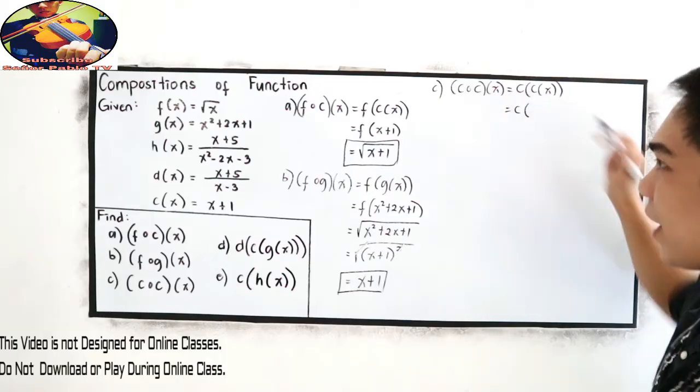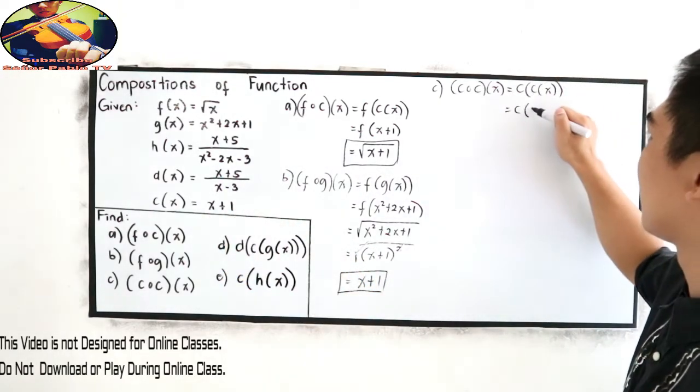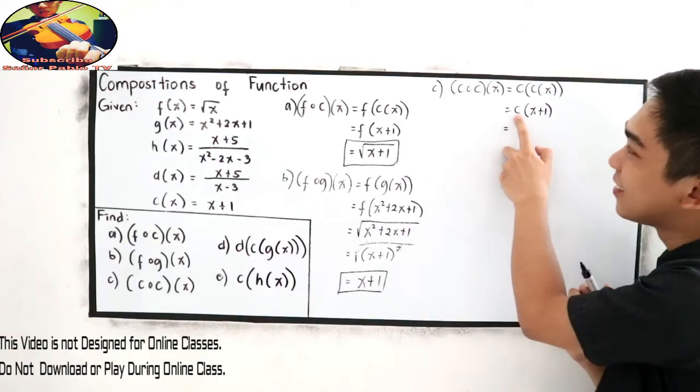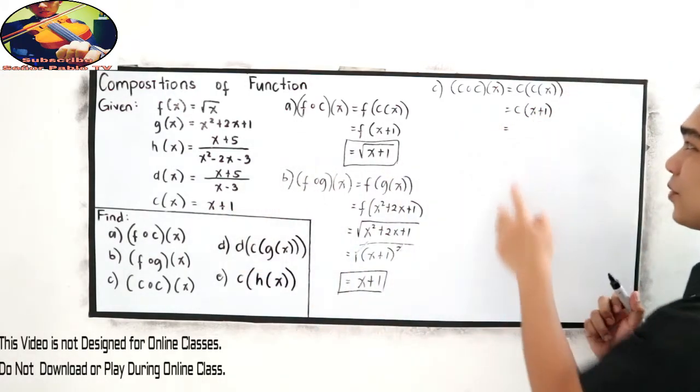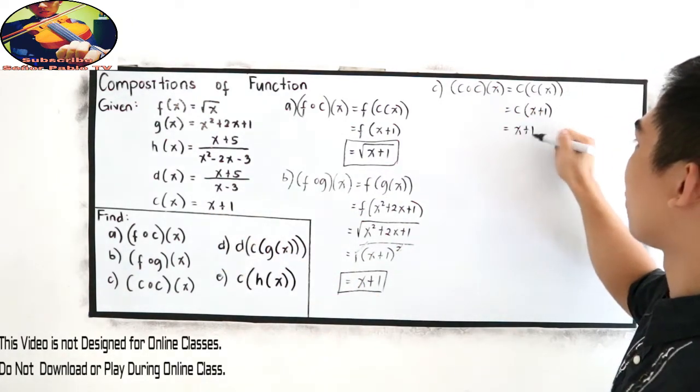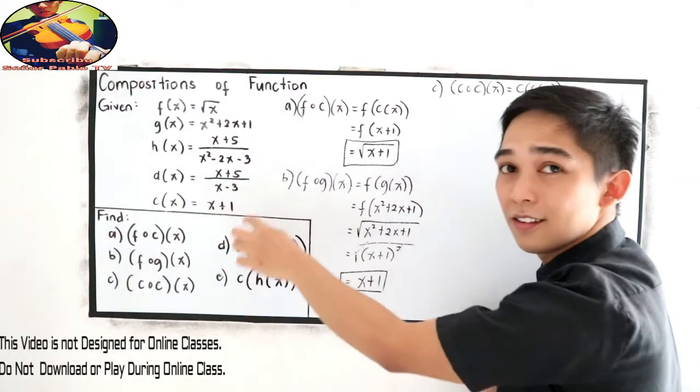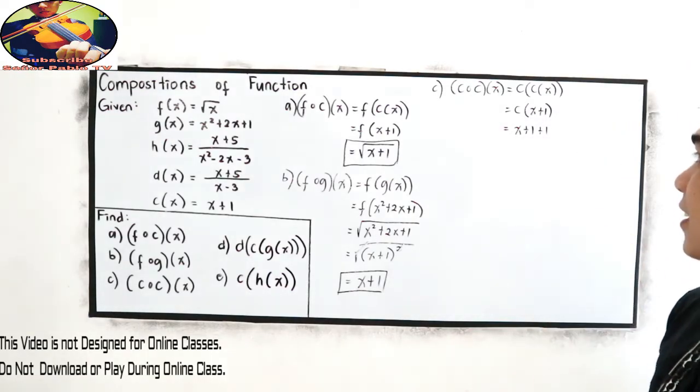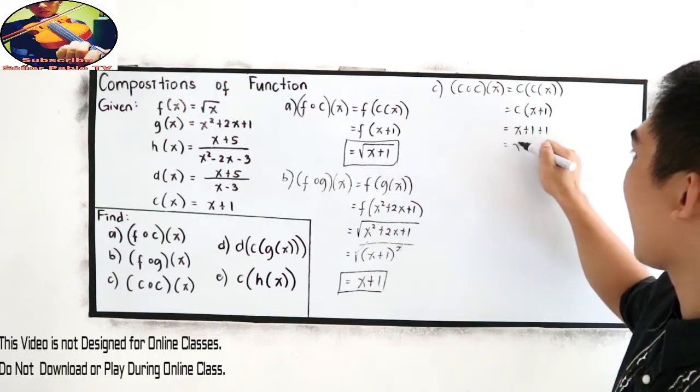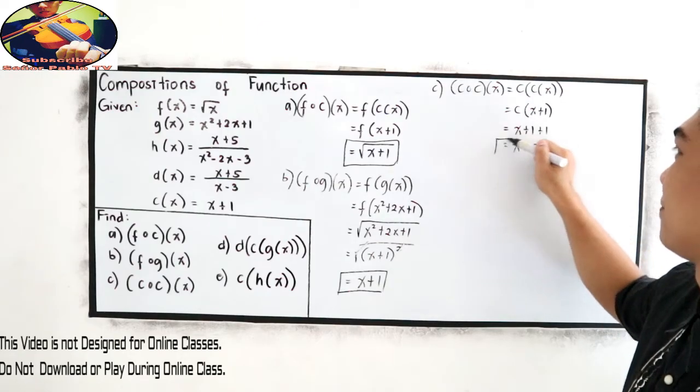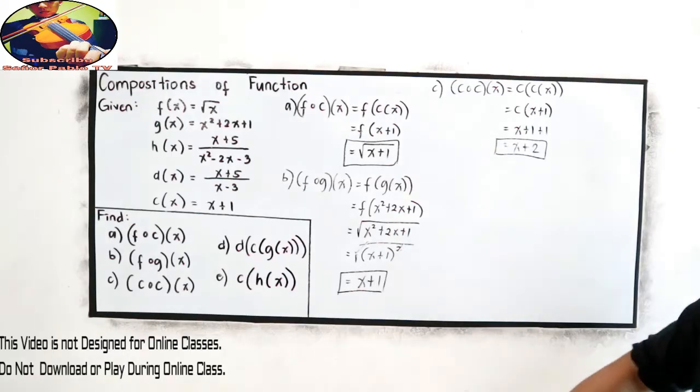So, copy C. Then, C of x is x plus 1. So, change to x plus 1. Now, C again. Change x to x plus 1. So, we are going to change x to x plus 1. Just change x. Then, we have plus 1. So, we just copy plus 1. And now, let us simplify. That is x plus 1 plus 1 is 2. So, C composed of C of x is equal to x plus 2.